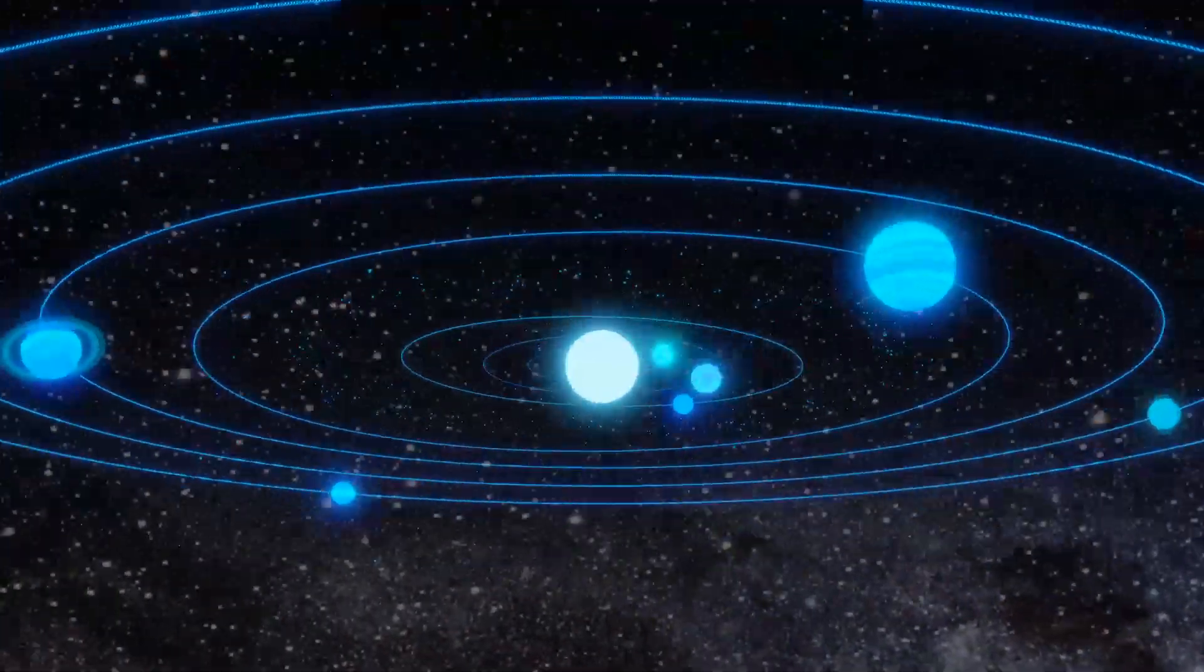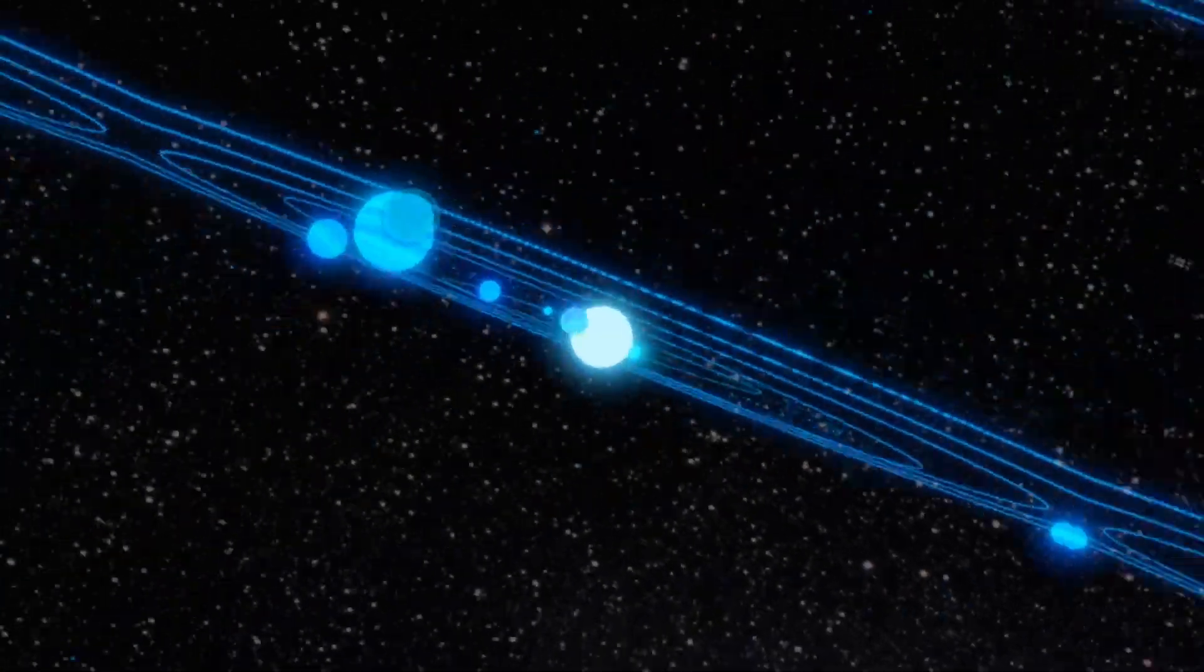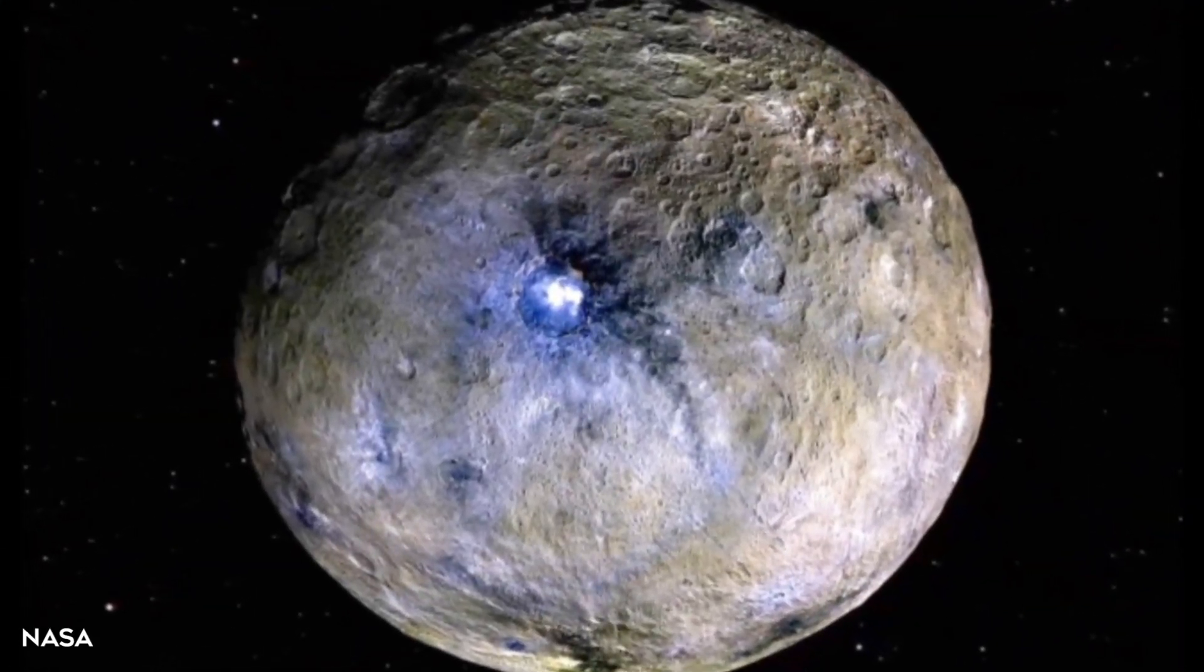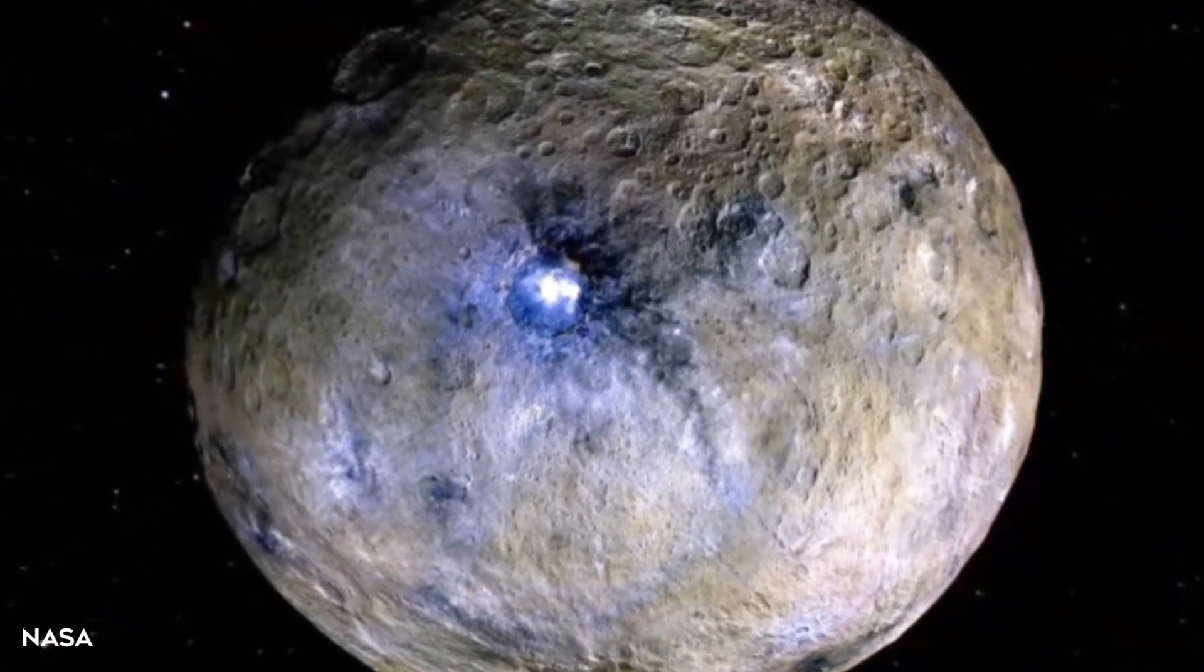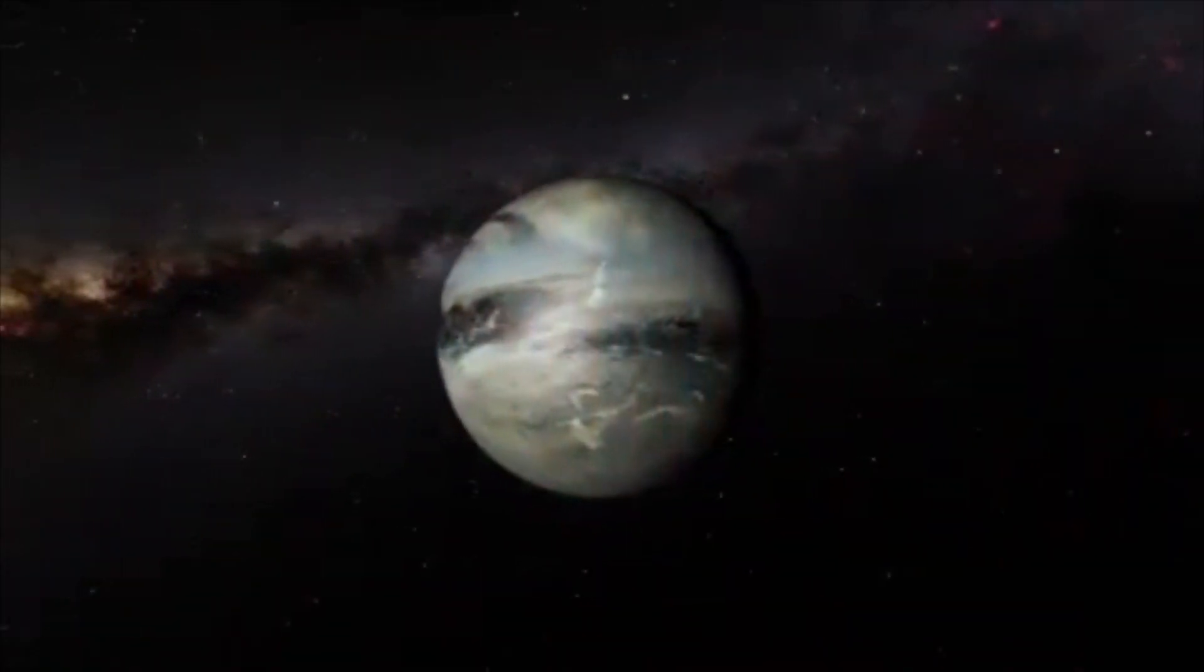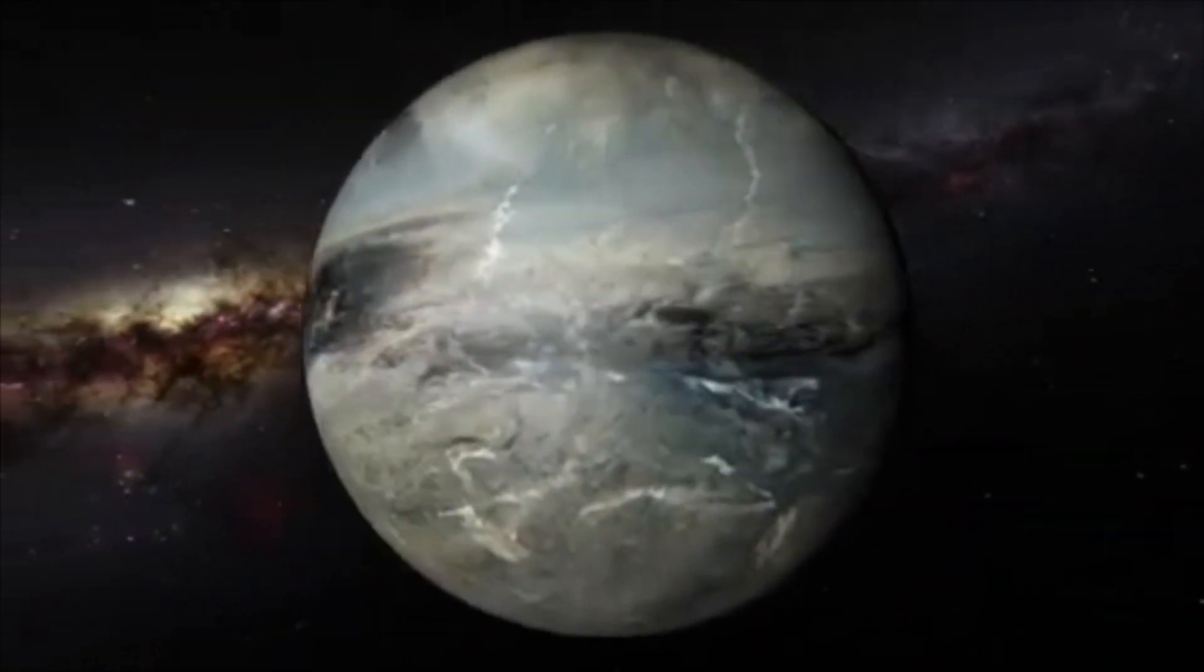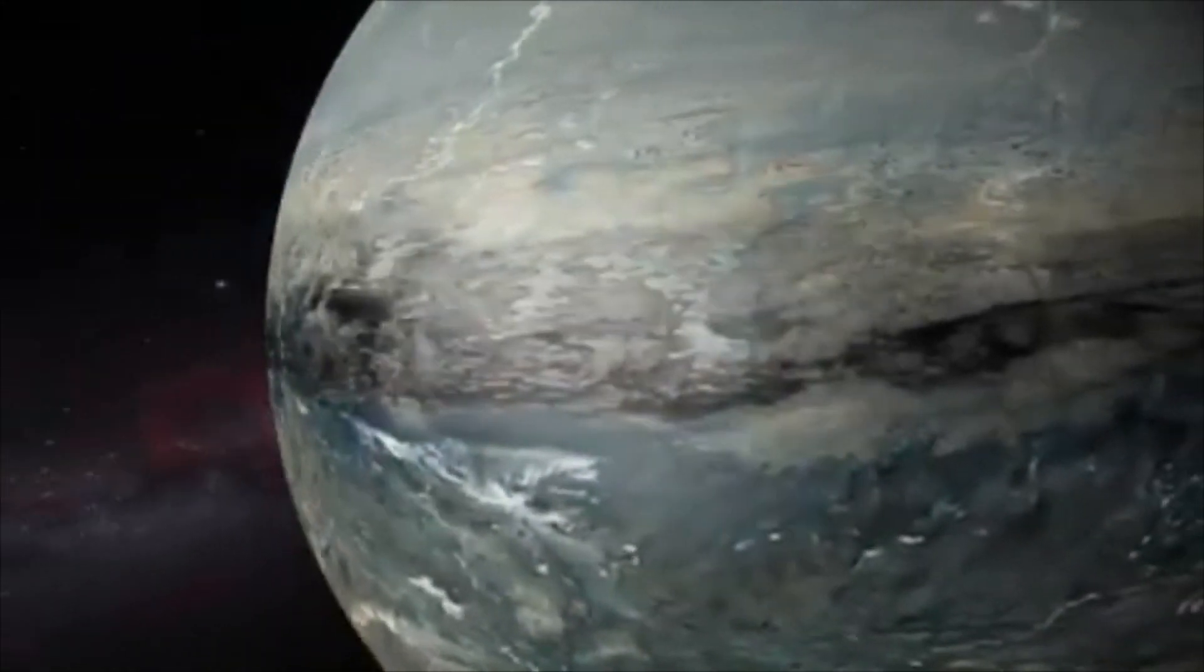It would not be the first time that the roll call of the Sun's orbiting worlds has been tweaked. When Ceres, the largest asteroid in the solar system, was discovered in 1801, it was initially classified as a planet but later downgraded. Pluto too was admitted into the Planet Club upon its discovery in 1930, only to be asked to leave in 2006 and relegated to dwarf planet status.